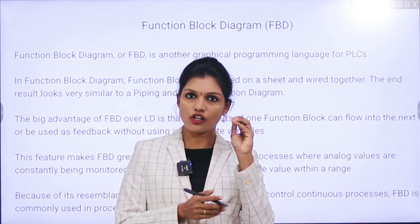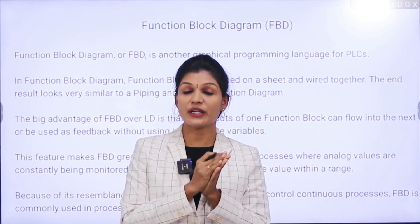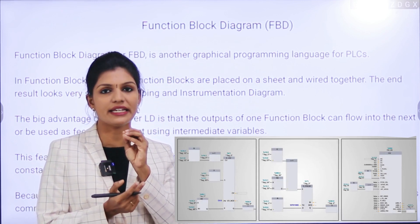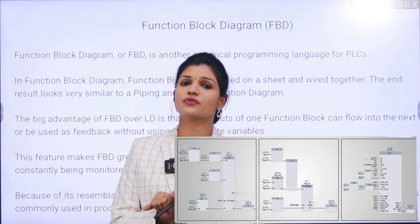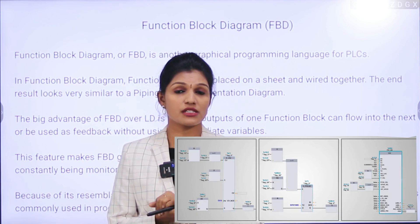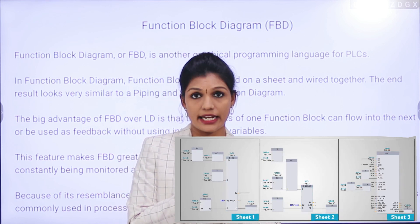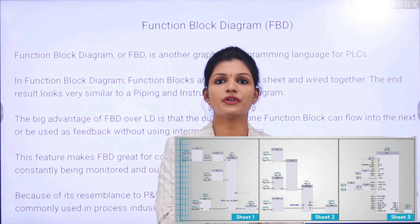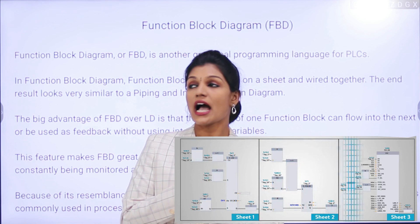The main advantage of the Functional Block Diagram compared to the Ladder Diagram is that the output of a particular functional block can be easily passed to the next block, or its feedback can be taken to another functional block, without implementing any intermediate variable. This feature makes FBD very powerful and provides a continuous controlling process — for example, monitoring an analog input continuously or setting an output range to a particular value.